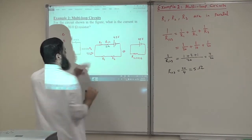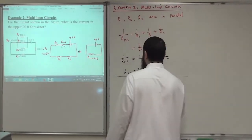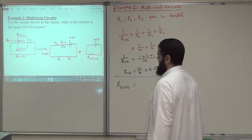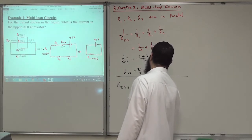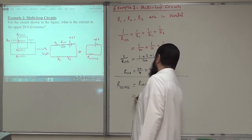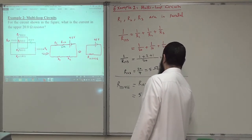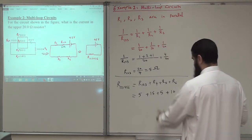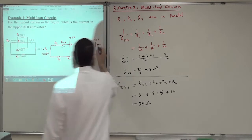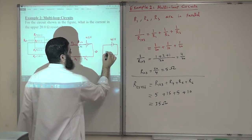So R123 is 5 ohms, connected in series with 15, 5, and 10 ohms. The total equivalent resistance R123456 is just the summation of all of them: R123 plus R4 plus R5 plus R6 equals 5 plus 15 plus 5 plus 10, giving 35 ohms. So as if we have this battery connected to 35 ohms.